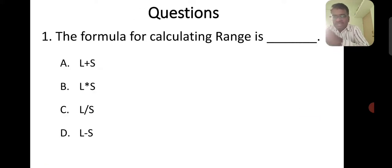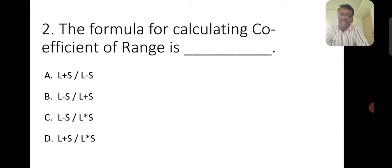So this was today's discussion about range, its meaning, advantages and disadvantages. Now let's look at some questions. The formula for calculating range is: option A, L plus S; option B, L into S; option C, L divided by S; option D, L minus S. So the right answer is option D, which says range is largest value minus the smallest value. Second question, the formula for calculating coefficient of range is: option A, L plus S divided by L minus S; option B, L minus S divided by L plus S. The correct answer is option B, L minus S divided by L plus S.